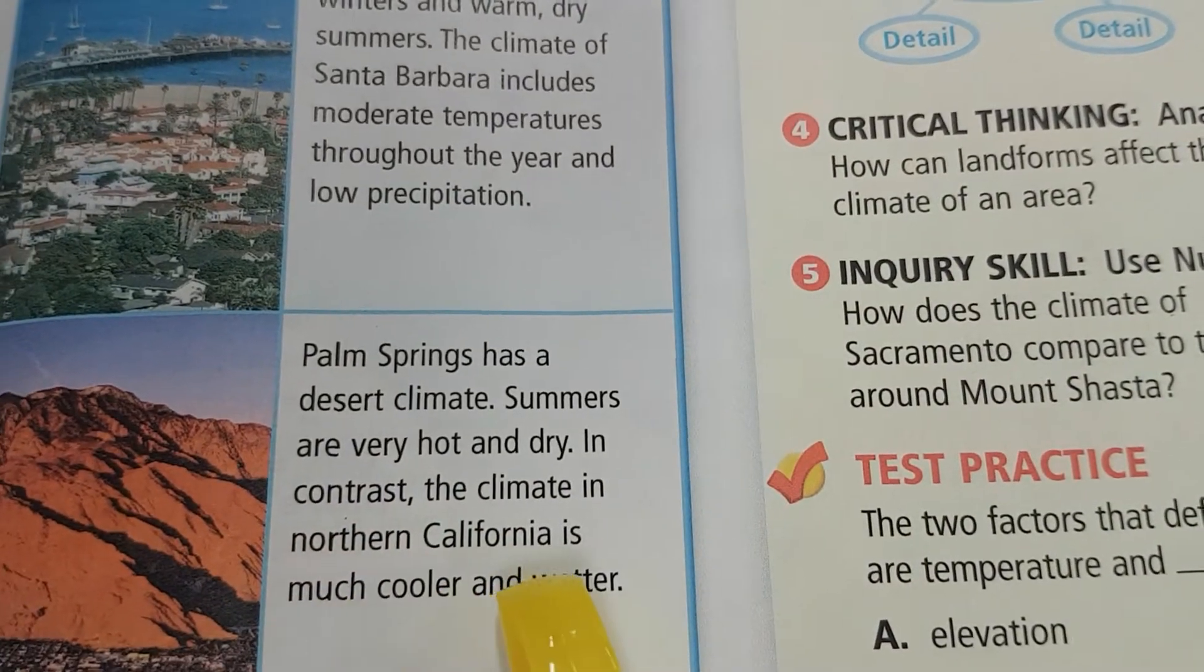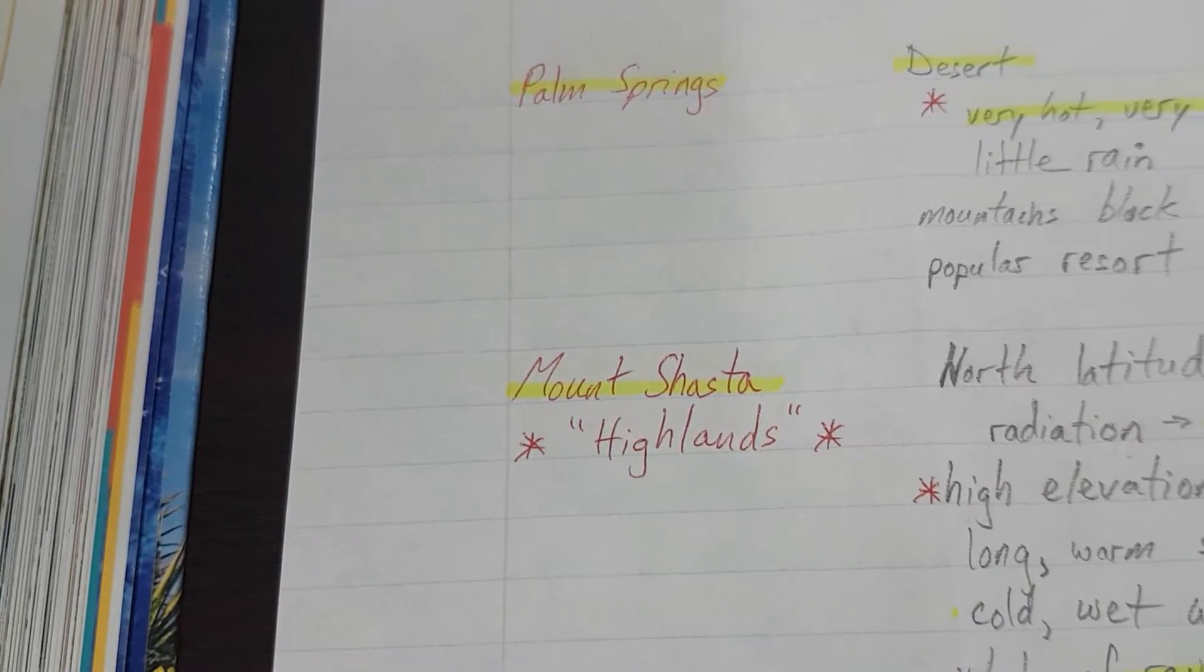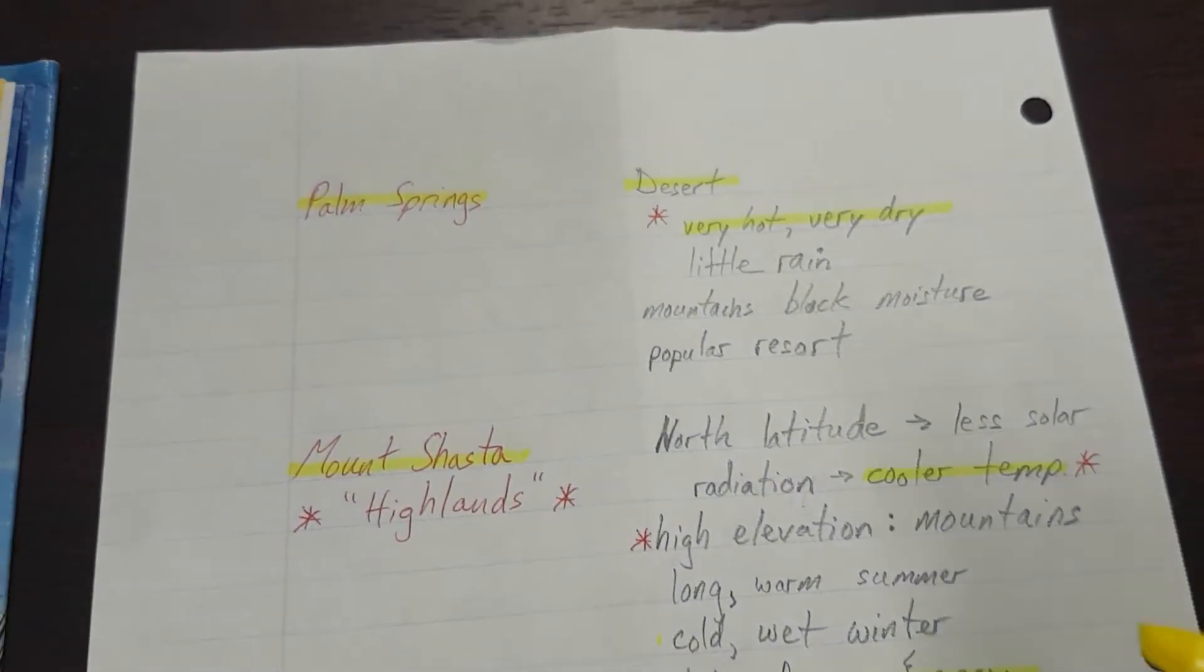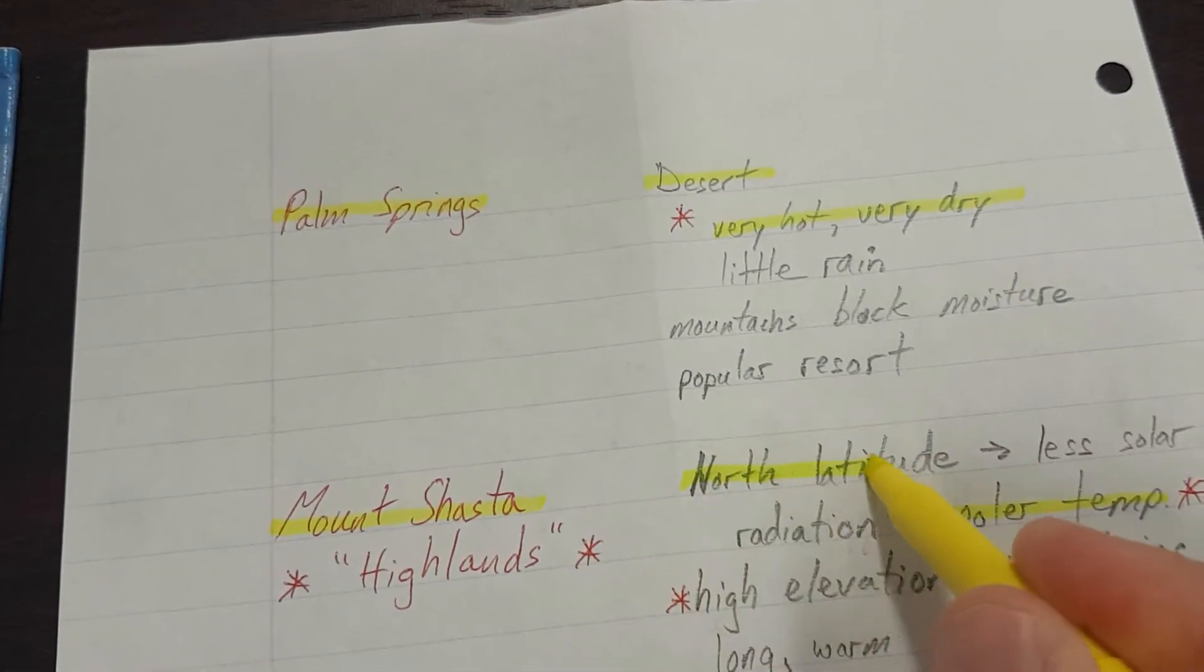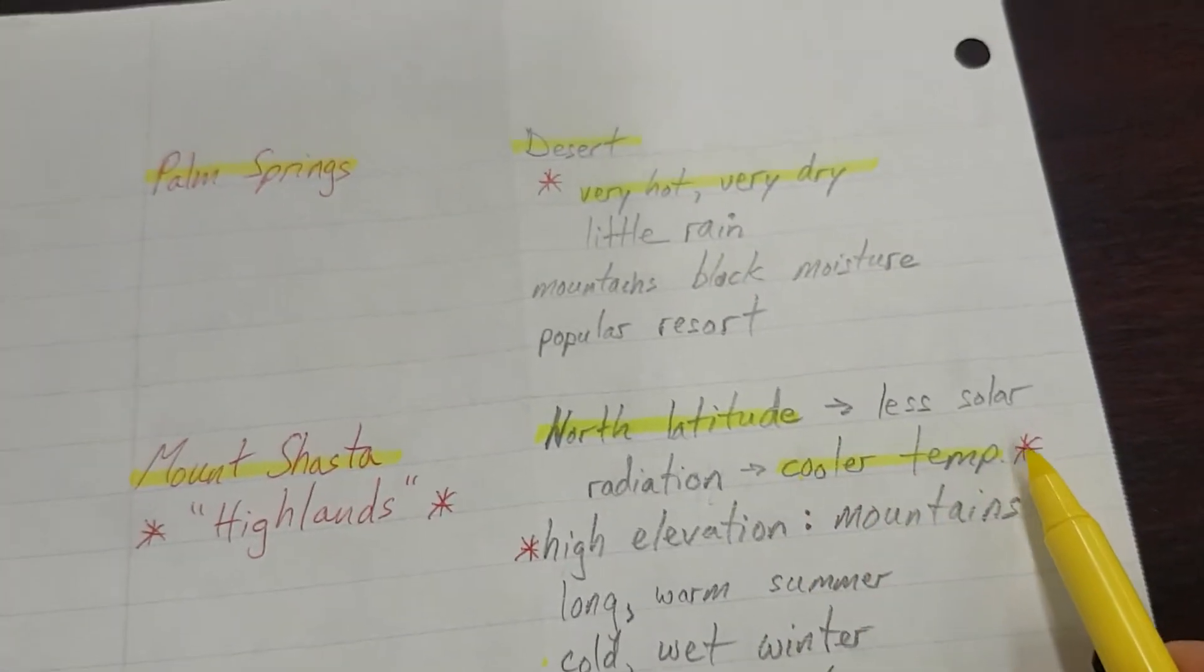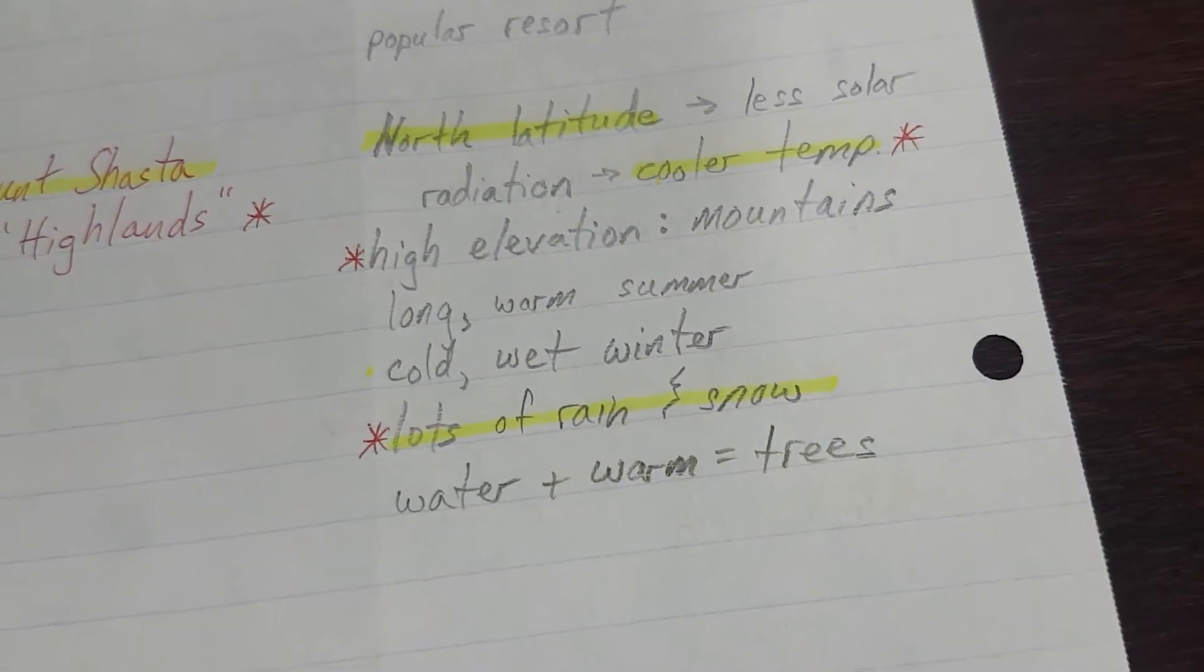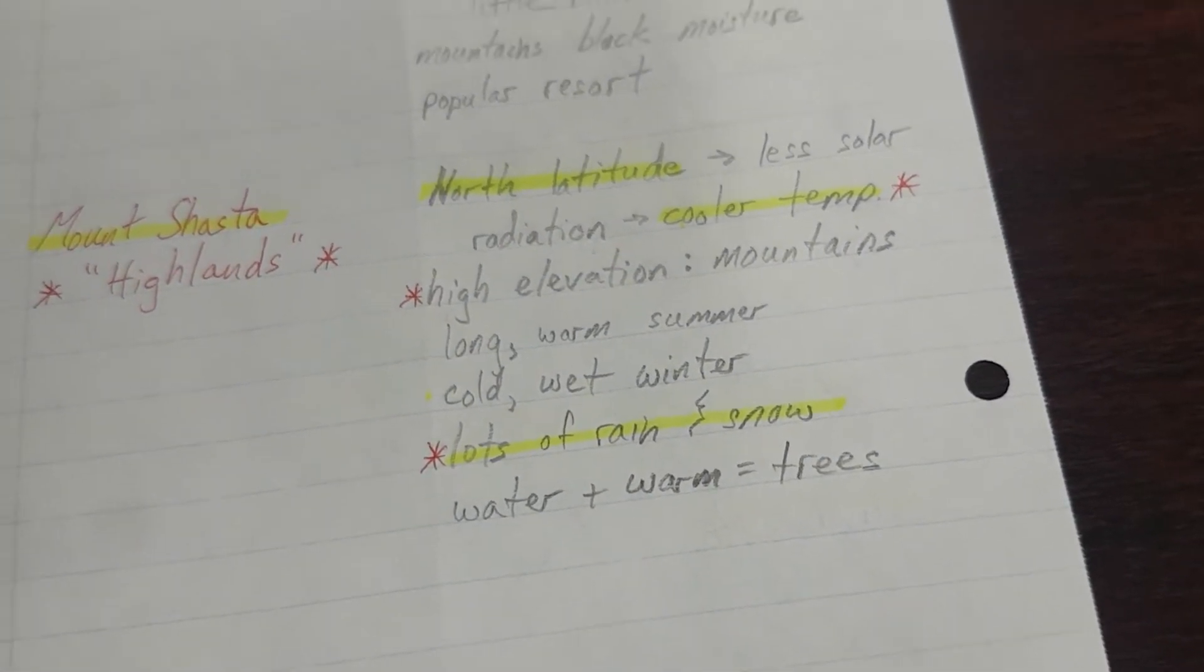In contrast, the climate in Northern California is much cooler and wetter. Highlight Mount Shasta. Highlight North Latitude, because it's Northern California. Cooler Temp for the cooler. Lots of rain and snow for the wetter.